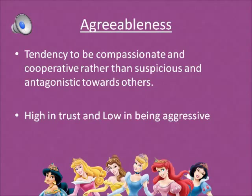Next, A is for agreeableness. This is the tendency to be compassionate and cooperative rather than suspicious and antagonistic towards others. High agreeableness includes straightforwardness, trust, tender-mindedness, and compliance. Low agreeableness would be aggressive, ruthless, and suspicious.